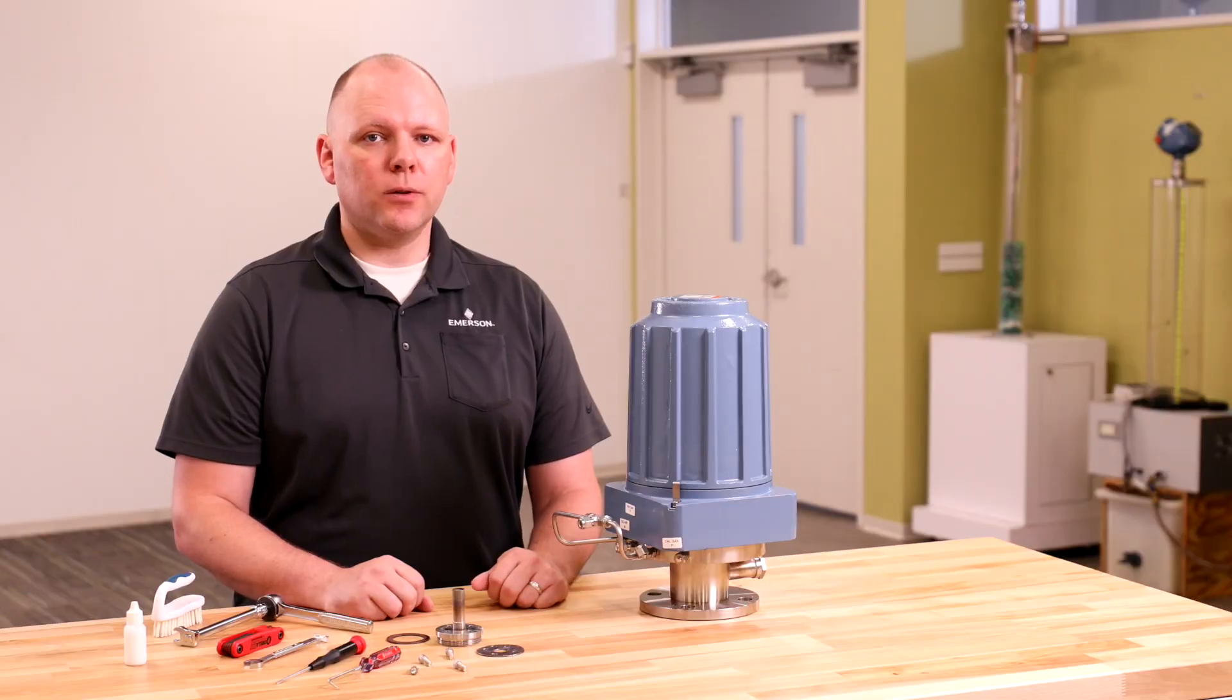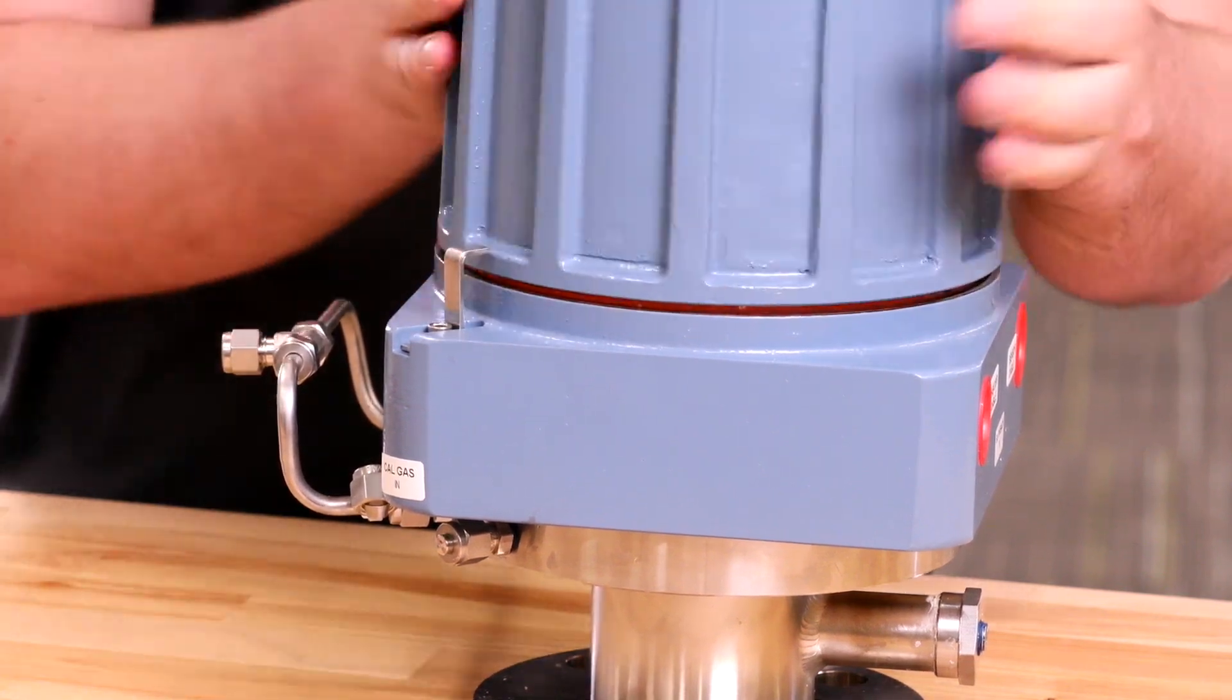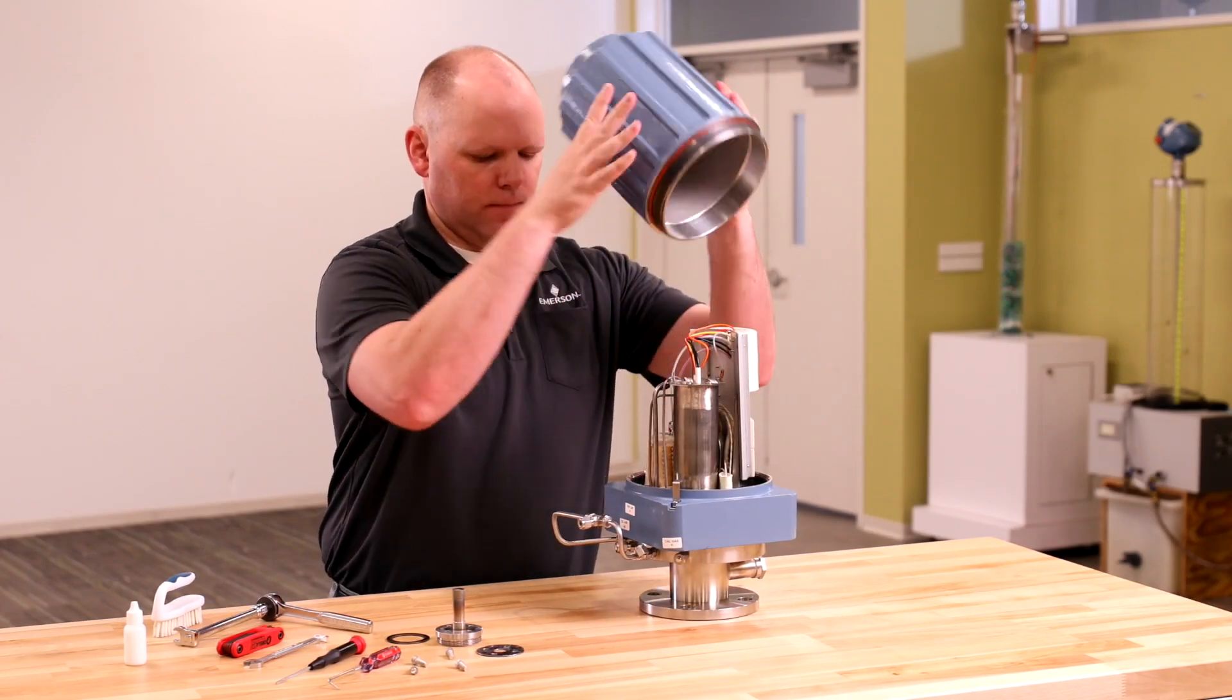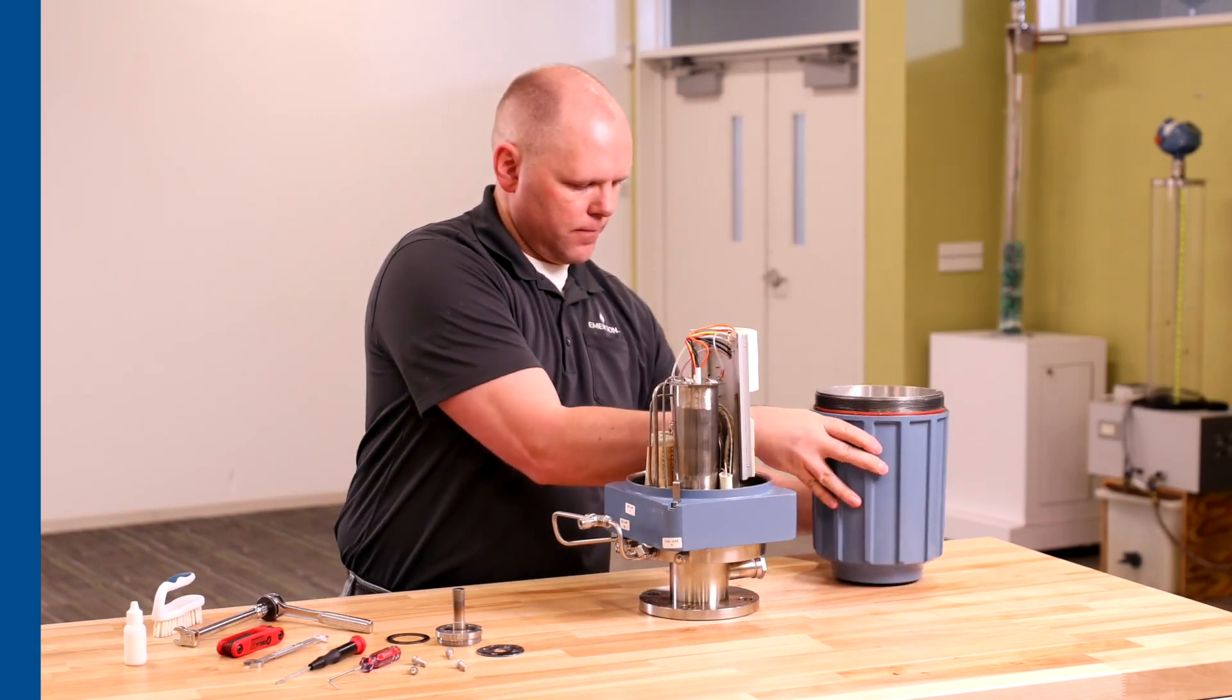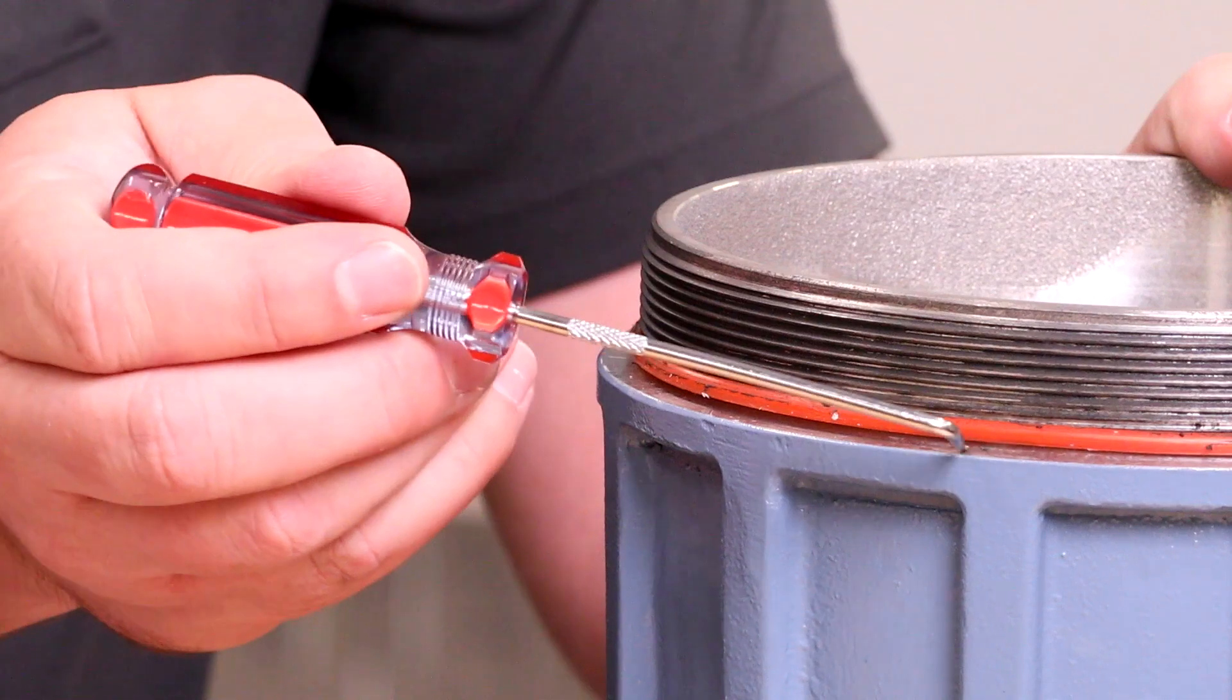With two hands, loosen and remove the cover. Inspect the cover O-ring for wear or damage. If the O-ring is damaged, it will need to be replaced.